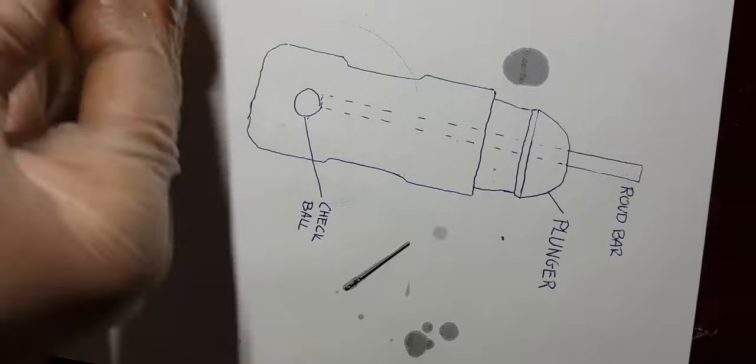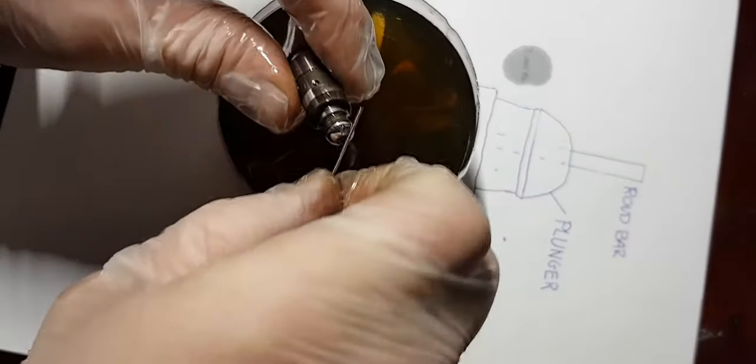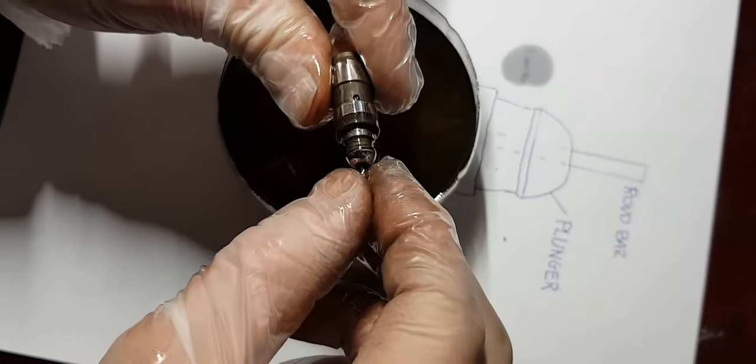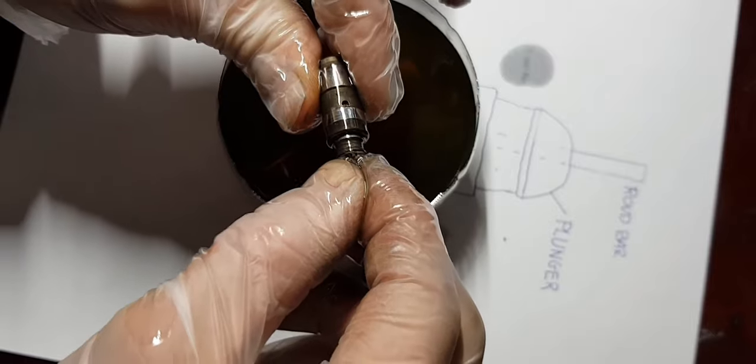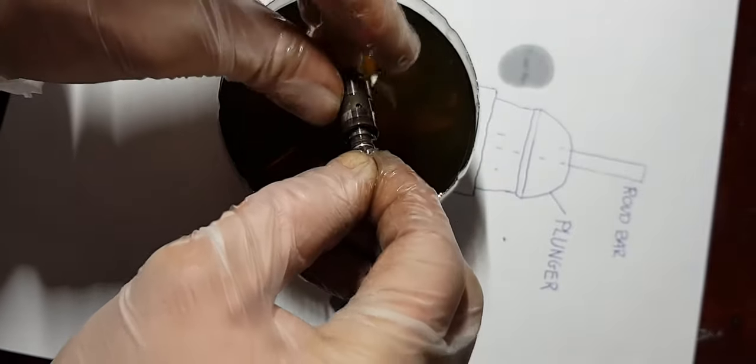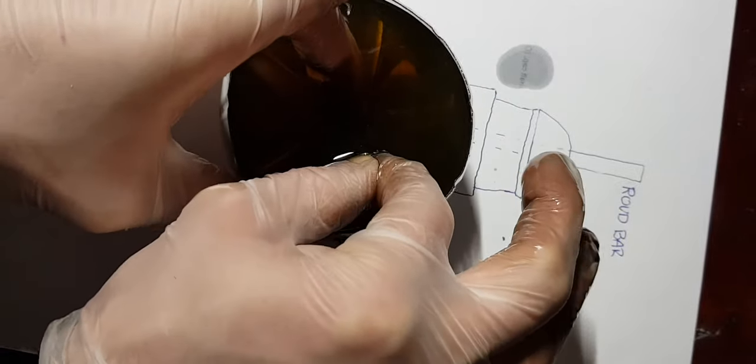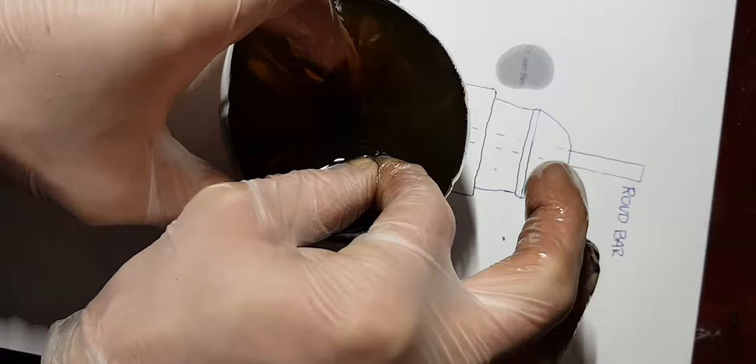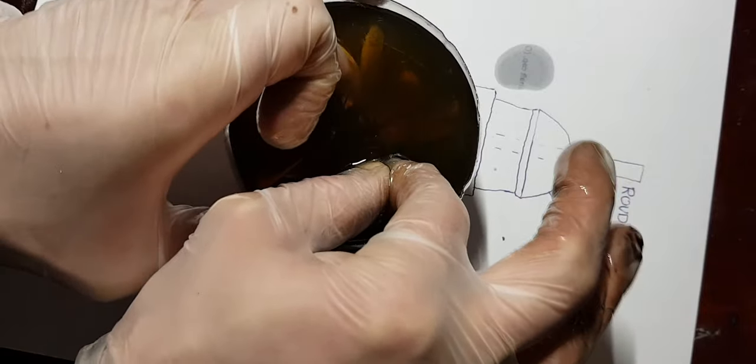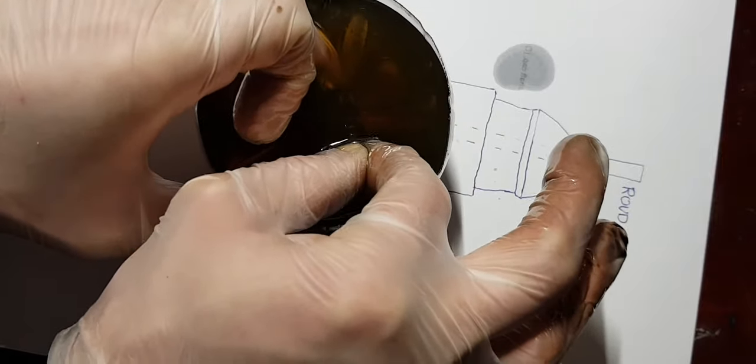Now we'll submerge it in the engine oil, then fill it up with it the same way as previously with diesel. Move up and down the plunger a few times until you see all the bubbles coming out of the HLA.